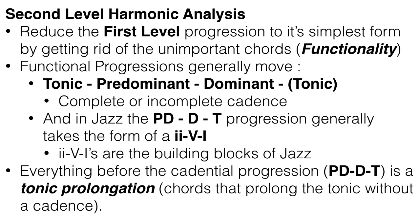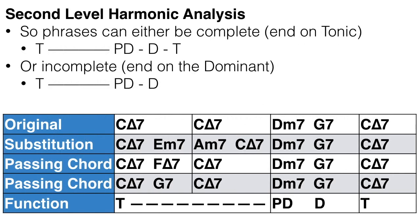Once a cadential or functional progression is identified — whether it's a 2-5-1 or anything else — everything before the predominant is classified as a tonic prolongation: chords that prolong the tonic without a cadence. A phrase can have a complete cadence ending on a tonic, or an incomplete cadence ending on a dominant. Tonic prolongation chords are generally just substitutions of the tonic chord or quick passing chords.